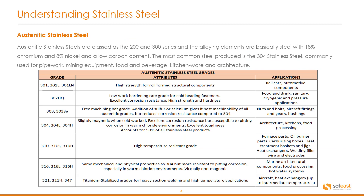Austenitic stainless steels are classed as 200 and 300 series. The alloying elements are basically steel with 18% chromium and 8% nickel and a low carbon content. The most common steel produced is 304 stainless steel, commonly used for pipework, mining equipment, food and beverage, kitchenware, and architecture.